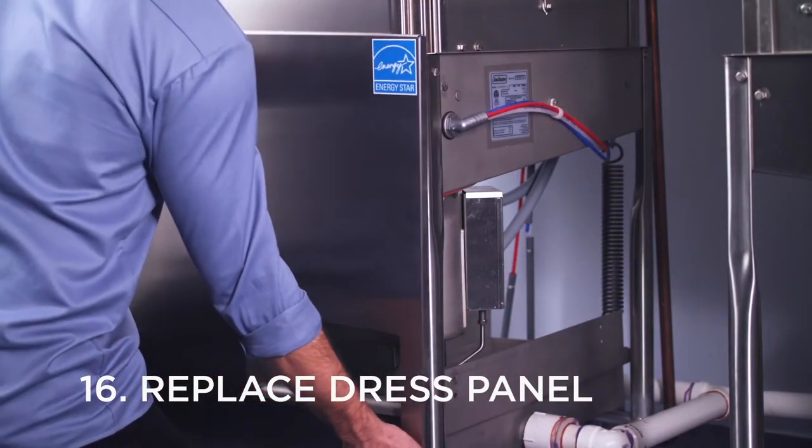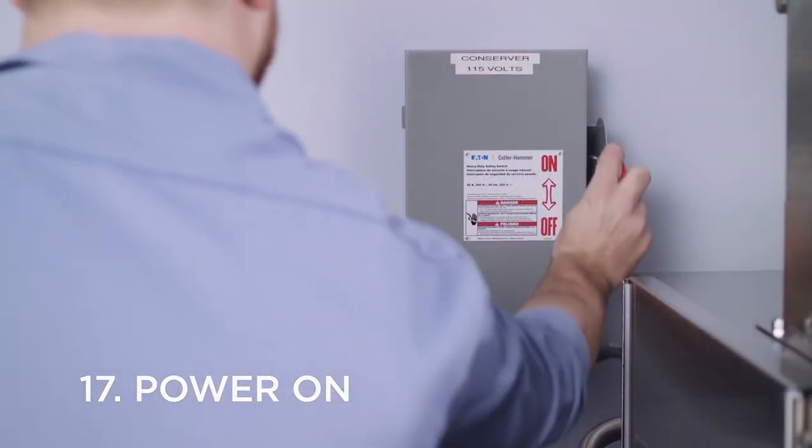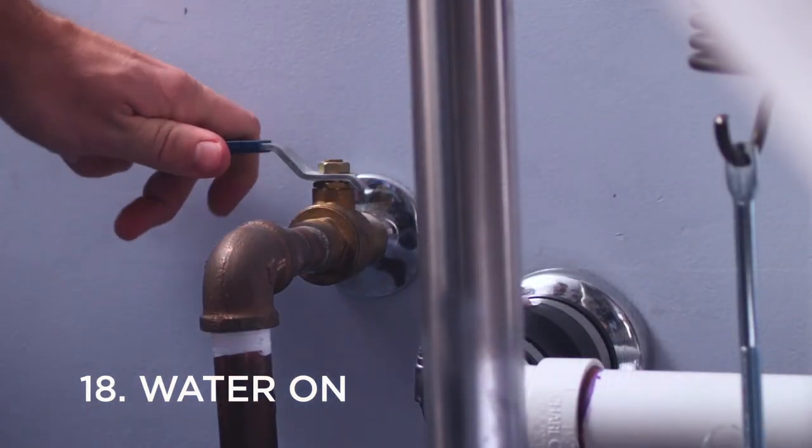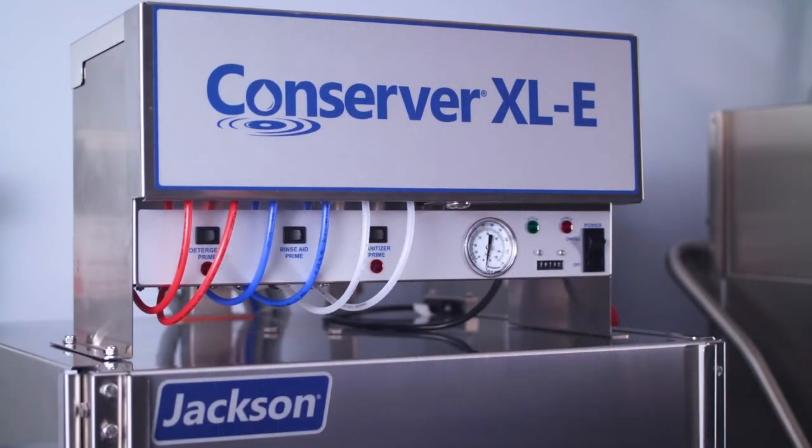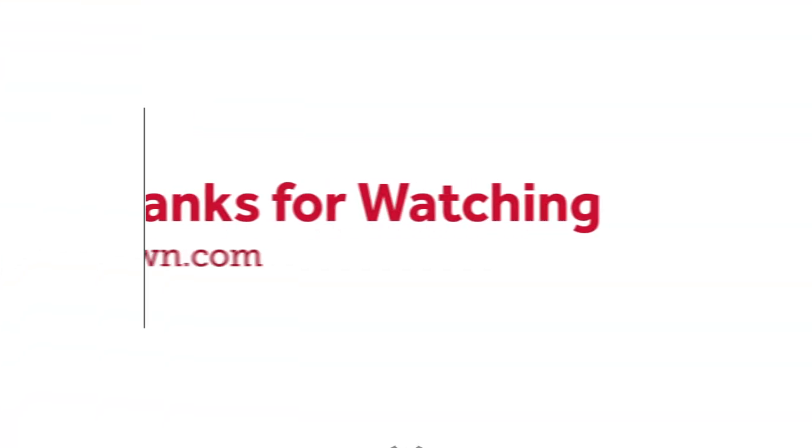Then, replace the front dress panel. You can now restore power at the circuit breaker and open the valve to the water supply line. For further information, refer to your Jackson Conserver Operator's Manual.